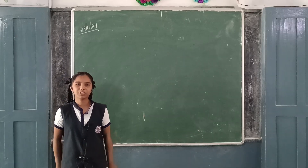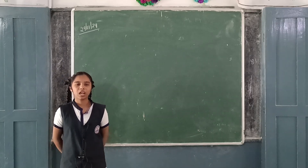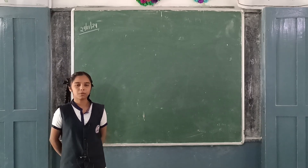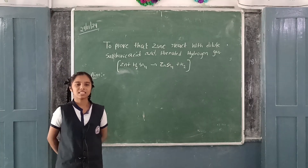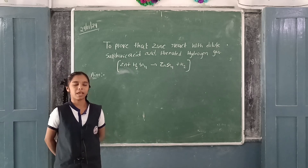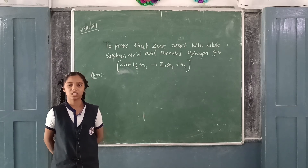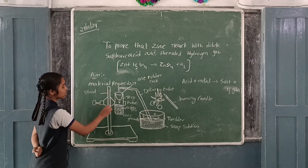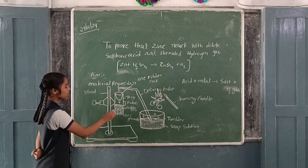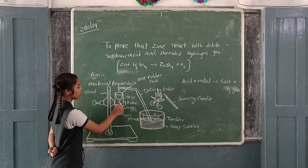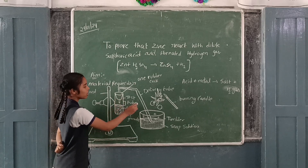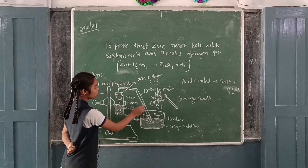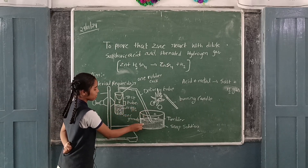Good morning, my dear friends. Today I would like to explain and prove that acid reacts with some active metals and liberates hydrogen gas. Materials required: stand, test tube, rubber cork, delivery tube, and a tumbler with soap solution.